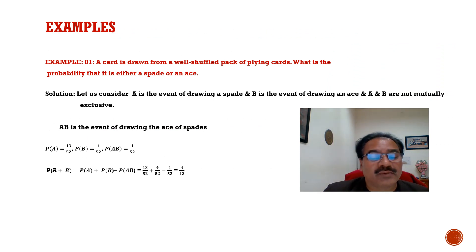Now one basic example. A card is drawn from a well-shuffled pack of playing cards. Playing cards, you must remember, has 52 cards and there are four colors, 13 each. What is the probability that it is either a spade or an ace?